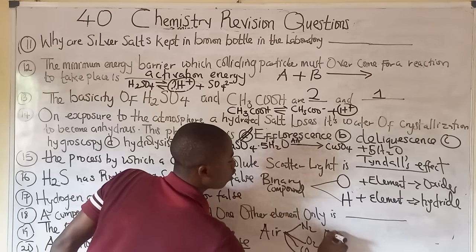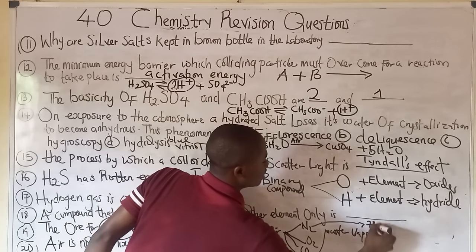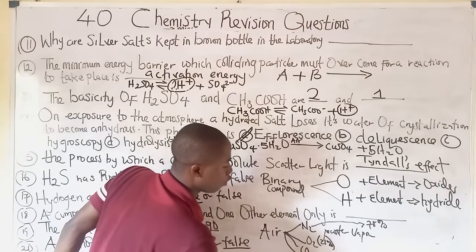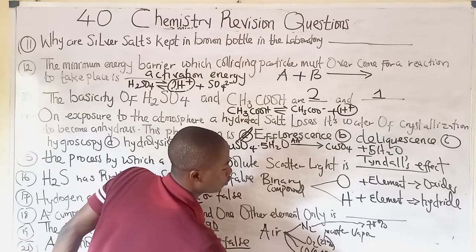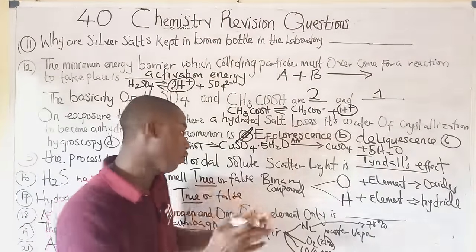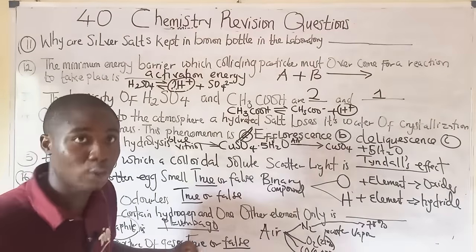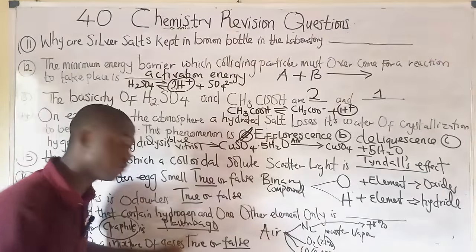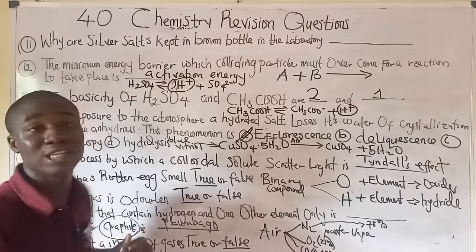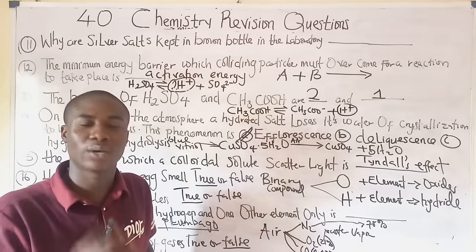Air contains various gases with their respective percentages: nitrogen 78%, oxygen 21%, carbon dioxide 0.03%, plus water vapor, dust, and noble gases. All these are components of air, making air a mixture of gases — not a compound or element.